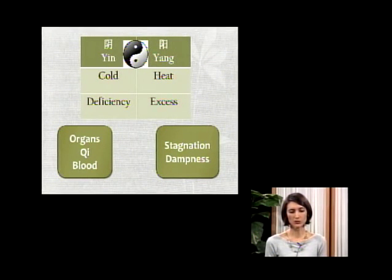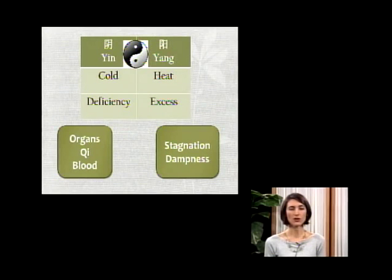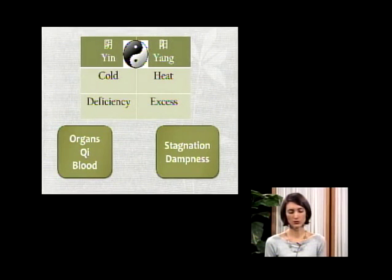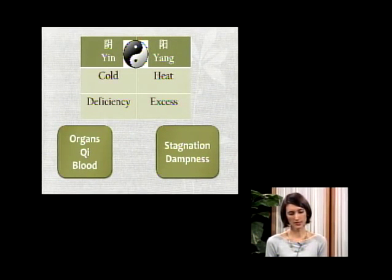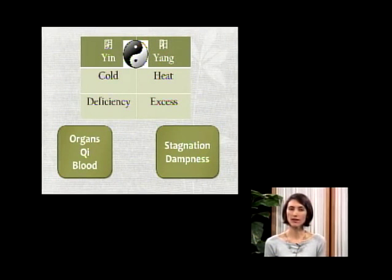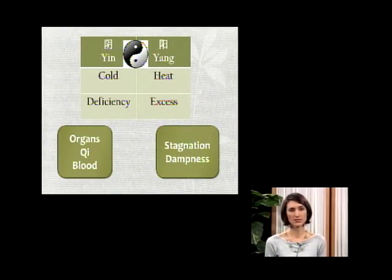When we talk about illness, we talk about cold and heat, deficiency — not having enough of something — and excess, or having too much of something. We can also use the organs like your lungs, heart, liver, kidneys, intestines, and spleen coupled with cold, heat, deficiency, and excess. For example, somebody may have deficiency in their lungs or excess heat in their digestive system.